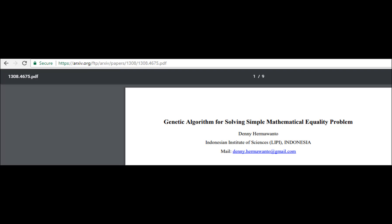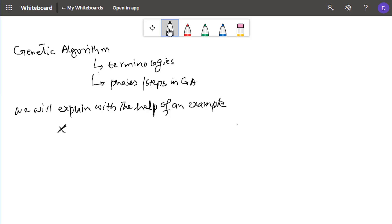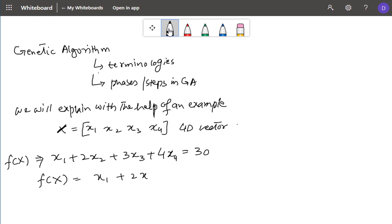Assume that we have a four-dimensional vector x. Further assume that we have a function f is equal to x1 plus 2 times x2 plus 3 times x3 plus 4 times x4 is equal to 30. We can also move the right-hand side in this equation to the left-hand side.